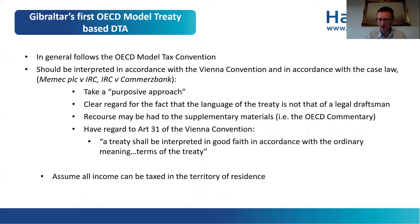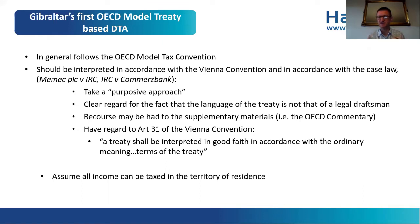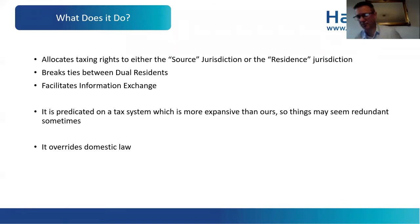We have to have regard to Article 31 of the Vienna Convention on Treaties, which says a treaty should be interpreted in good faith in accordance with the ordinary meaning of the terms. There's no fancy accountancy or legal terminology — it's the ordinary meaning of the words we're looking at. We should assume that income is taxed in the territory of residence of the entity or individual unless the treaty says otherwise.